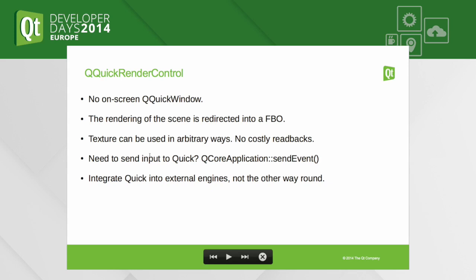Regarding the question of input — how do you get mouse, touch, or keyboard into a scene if there's no window on the screen? Send events to the Qt window — you still have that, it's just hidden. There's no mystery there.